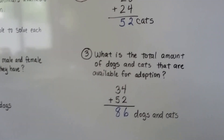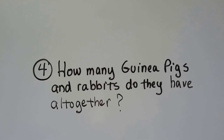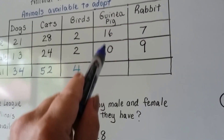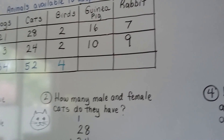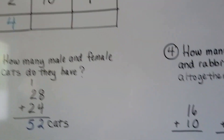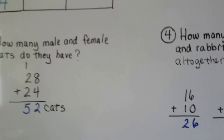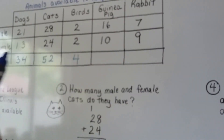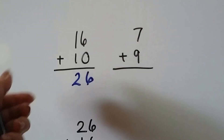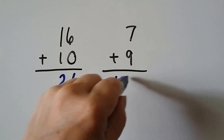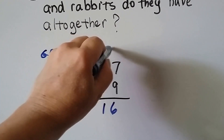We know they have 86 dogs and cats that need a home. Now, how many guinea pigs and rabbits do they have altogether? We need to add the male and female guinea pigs, then add the male and female rabbits, and then add those together — just like we did with dogs and cats. They have 16 male guinea pigs and 10 female, which totals 26. For rabbits, there are 7 male and 9 female. We start with nine and count on seven: ten, eleven, twelve, thirteen, fourteen, fifteen, sixteen.